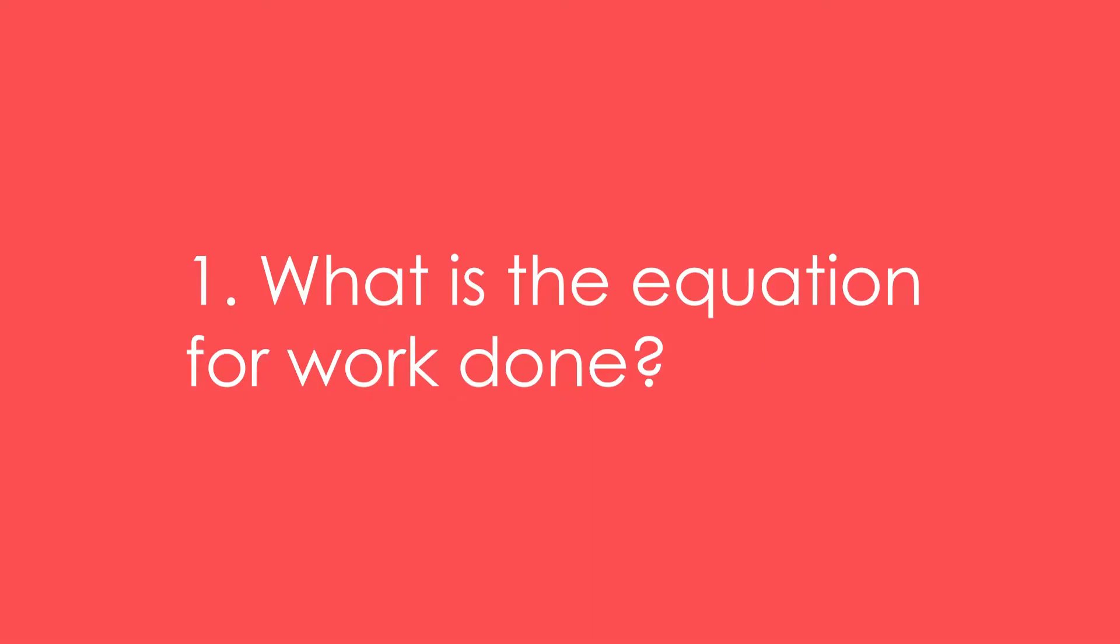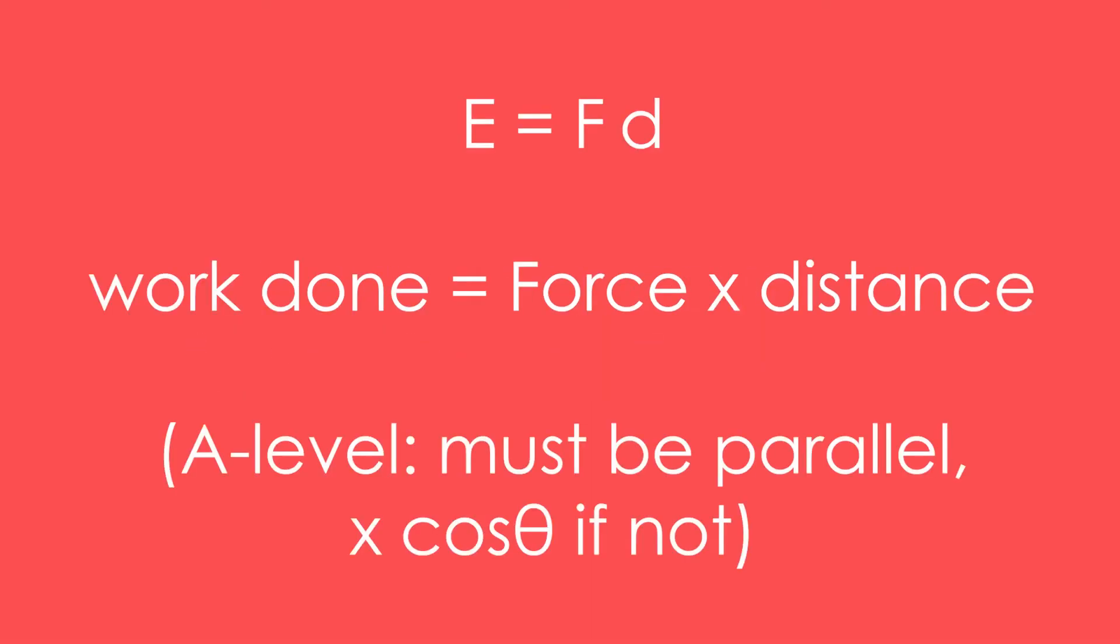1. What is the equation for work done? E equals FD. You might see W equals FD, could be S instead of D as well, but I prefer E because it's energy. Work done equals force times distance. A-level people, don't forget that these must be parallel. If they're not, then we times by cos theta, the angle between.